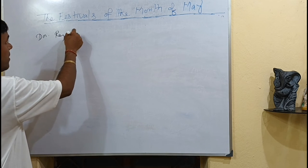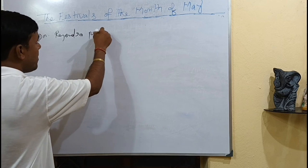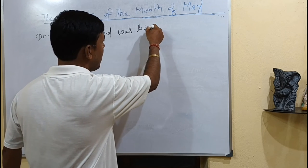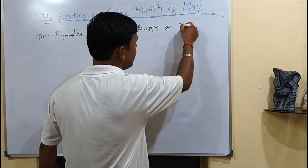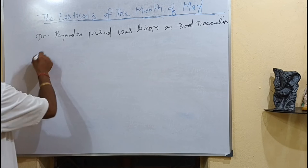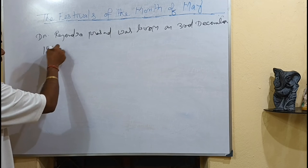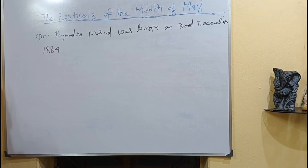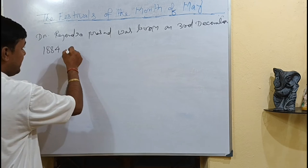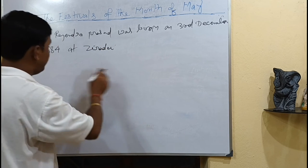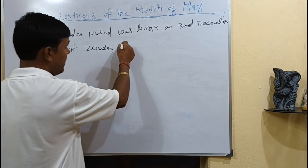Dr. Rajendra Prasad was born on 3rd December 1884, at the place Ziradei, which was in Bengal Presidency at that time and is now in Bihar.